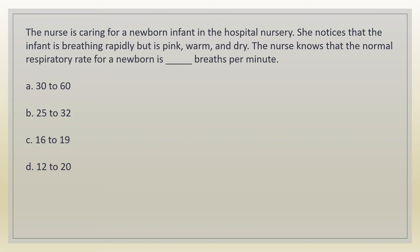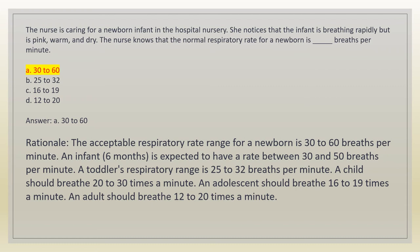The nurse is caring for a newborn infant in the hospital nursery. She notices that the infant is breathing rapidly but is pink, warm, and dry. The nurse knows that the normal respiratory rate for a newborn is how many breaths per minute? A. 30-60. B. 25-32. C. 16-19. D. 12-20. Answer: A. 30-60. Rationale: the acceptable respiratory rate range for a newborn is 30-60 breaths per minute. An infant 6 months is 30-50; toddler 25-32; child 20-30; adolescent 16-19; adult 12-20 breaths per minute.